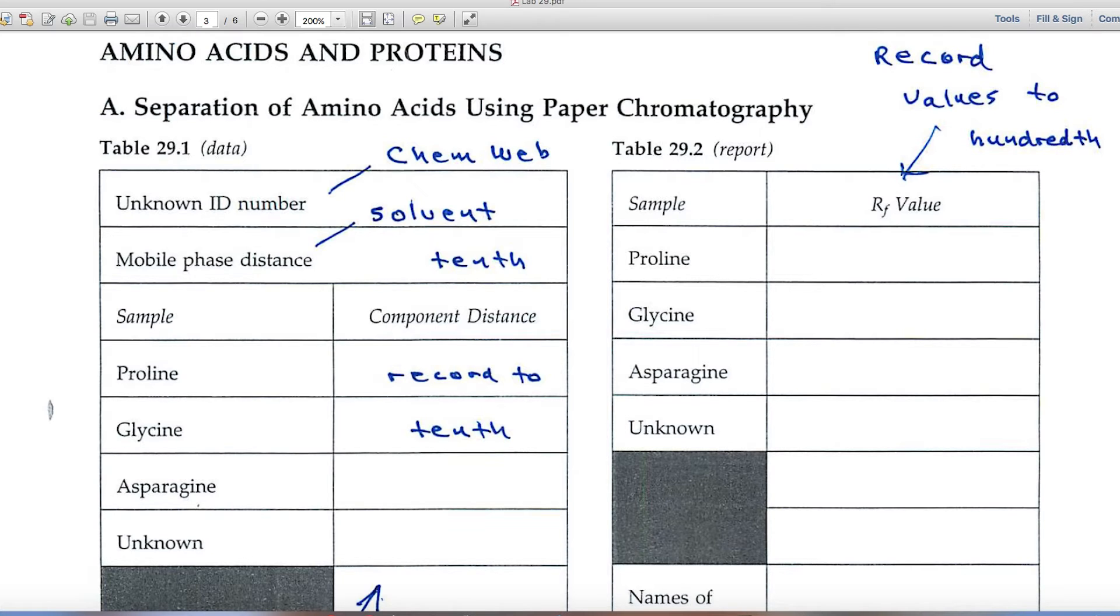And that involves putting a piece of paper into a solution. The solution climbs the piece of paper, and as it does so, it separates the amino acids that have been spotted on the paper.